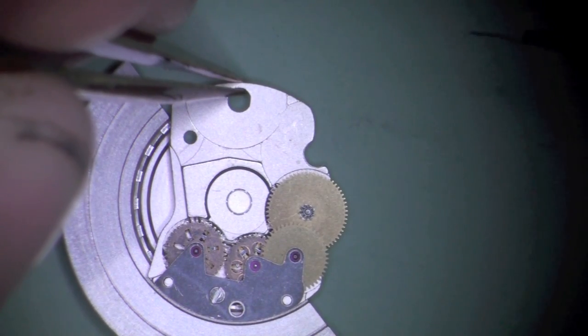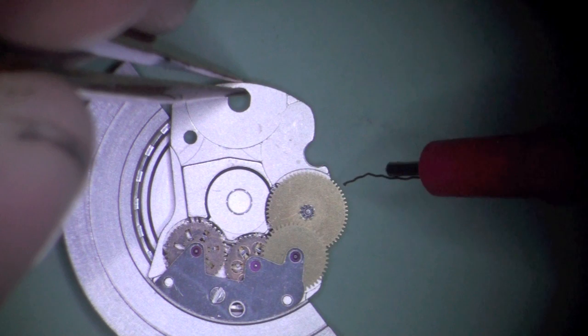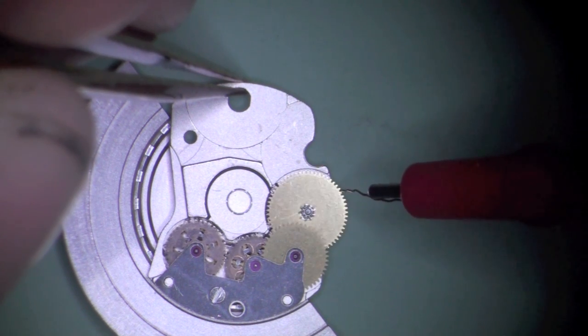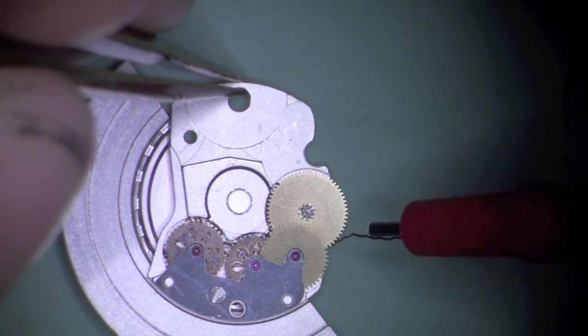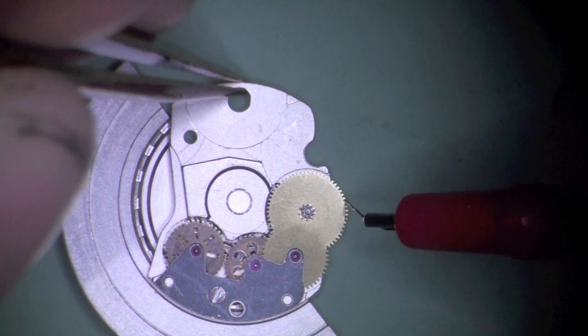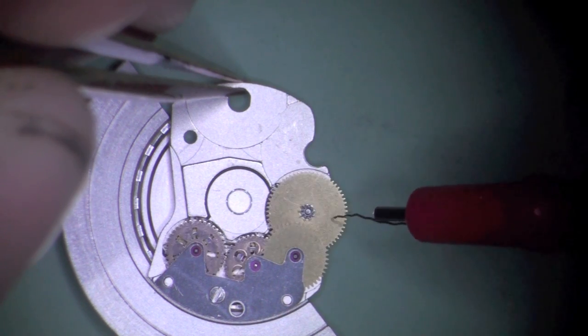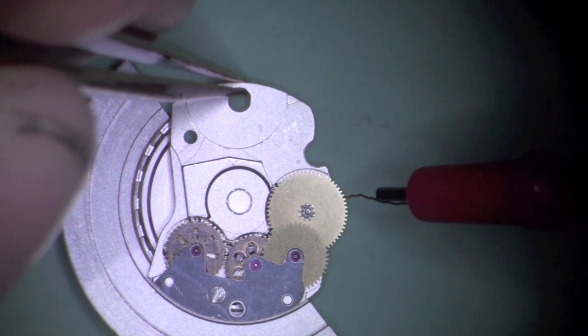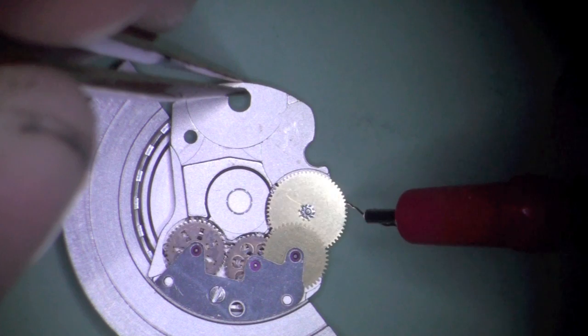This is a 2824 automatic module that has not been properly serviced. When applying pressure to the ratchet driving wheel in the winding direction, both reversers slip but with a lot of resistance. Note the deflection of the brass bristle.